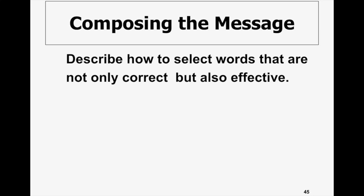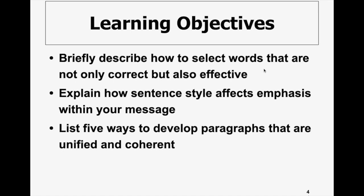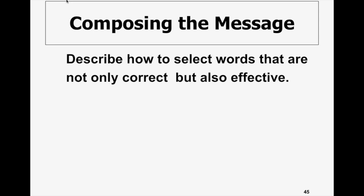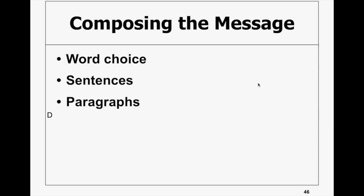We have now moved to composing the message. The topic is how to select words that are not only correct but also effective — correctness and effectiveness. When we compose a message, three things matter: selection of words, construction of sentences, and construction of paragraphs. Word selection is very important, and after words, the second important thing is your sentence construction.